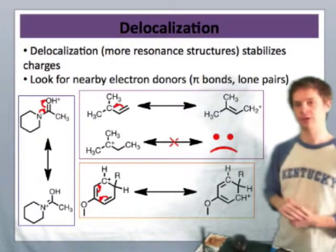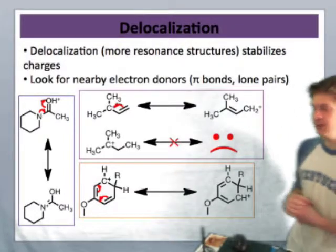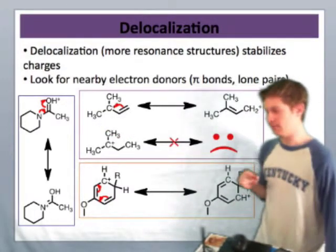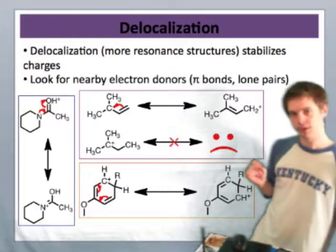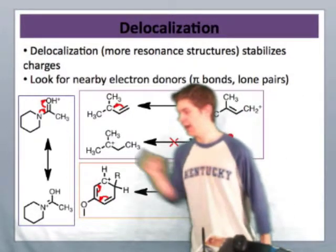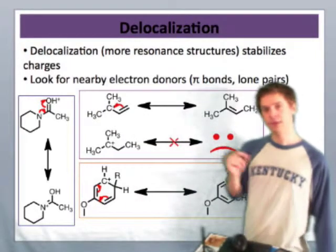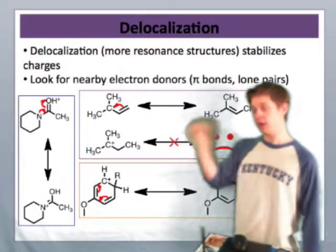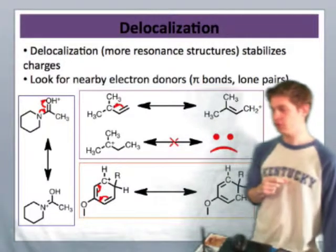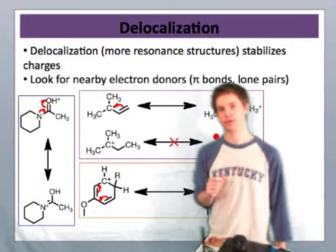A couple of other examples that you may run into are shown on this slide. The example on the far right is that of the protonated amide. An amide is a carbonyl group with a nitrogen attached to the carbonyl carbon, and what you can see from the top structure is that the nitrogen of the amide can donate towards the positive charge on the protonated amide.